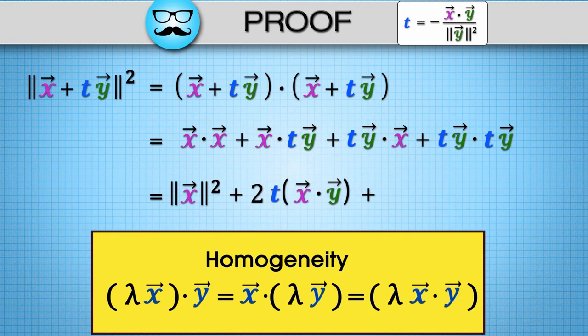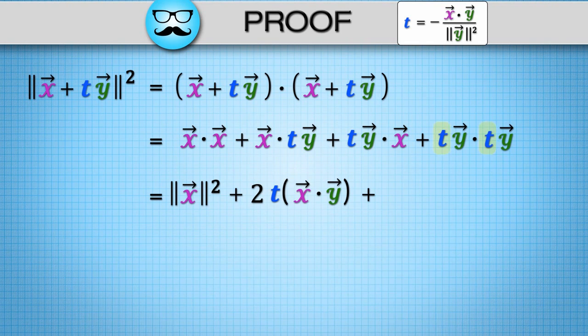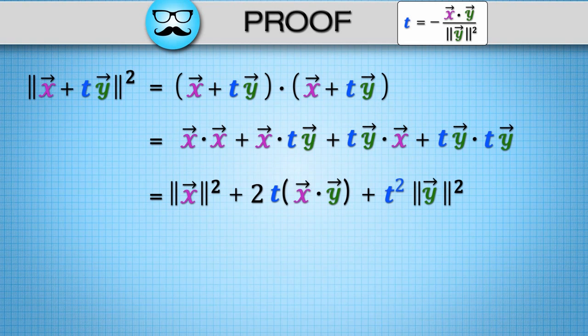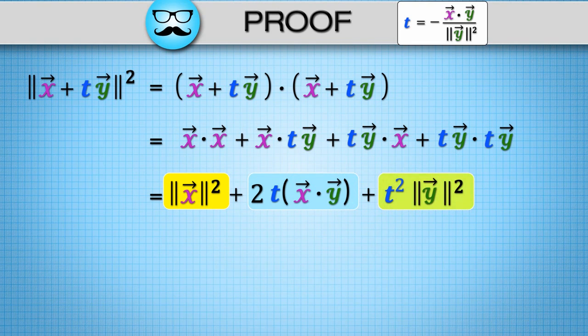Moreover, by homogeneity, we can pull out each t in ty dot ty to get t squared y squared. So combining the inner dot product terms and converting the outer dot products back to norms, we get the norm of x squared plus 2t x dot y plus t squared norm of y squared.